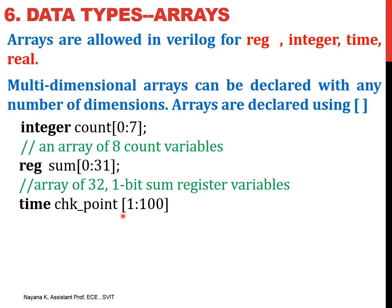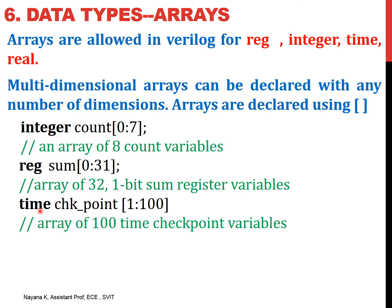Next: time checkpoint, 1 to 100. Checkpoint is an array whose name is checkpoint. If you observe carefully, the index numbering starts from 1 rather than 0. When it starts from 1, the ending number is the actual count of the array. So 1 to 100 means there are 100 elements. Checkpoint is an array having 100 elements, and each element is of type time — it will store simulation time values. We are declaring an array of 100 time checkpoint variables.